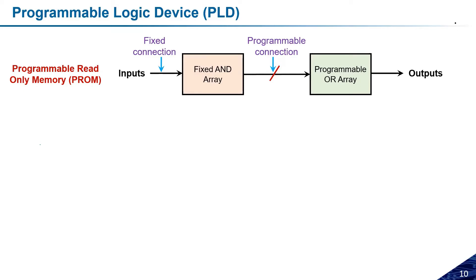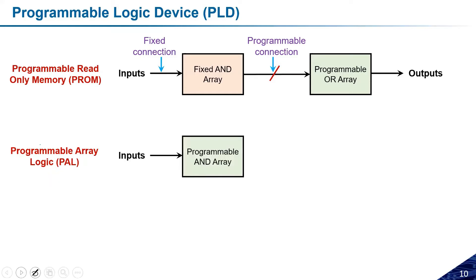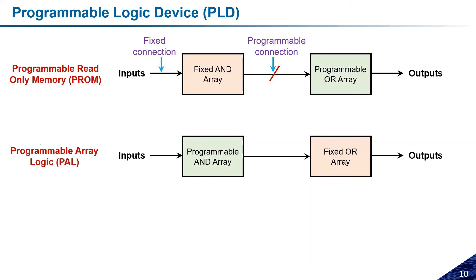The next kind of programmable logic device is the Programmable Array Logic (PAL). In PAL, the AND structure is programmable and the OR structure is fixed. So if we can program the input side and the outputs are fixed, we call this a PAL.